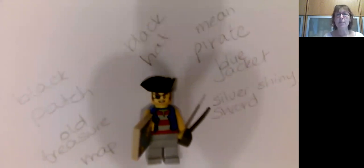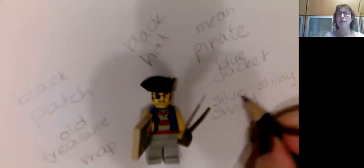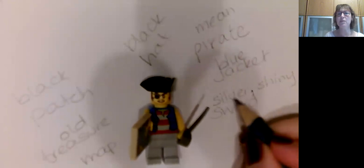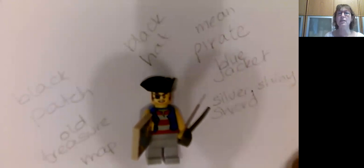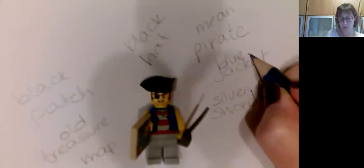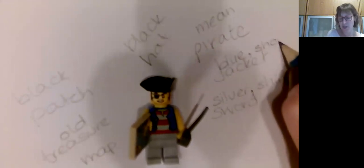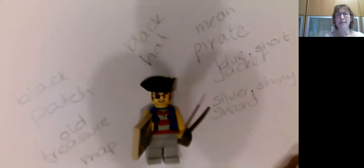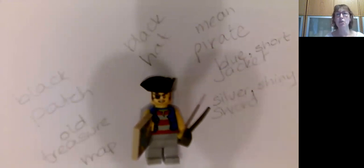If we put two adjectives — so here we've got silver and shiny with a comma in between the two — we have a silver, shiny sword, or a blue, short jacket. Then what we've got is an expanded noun phrase, because we've got two adjectives.